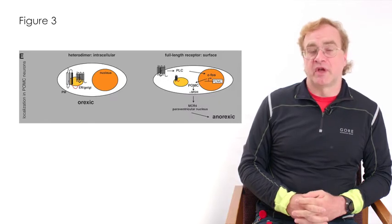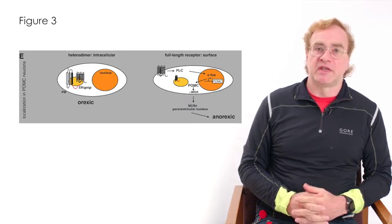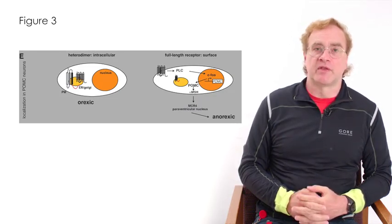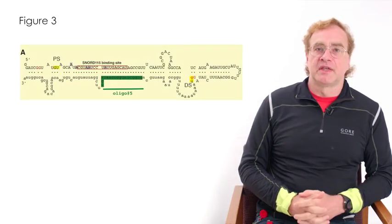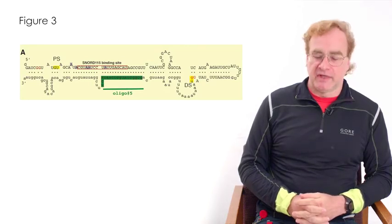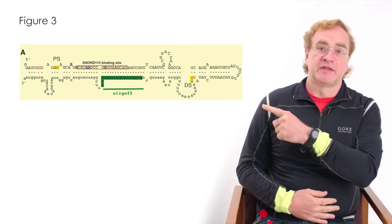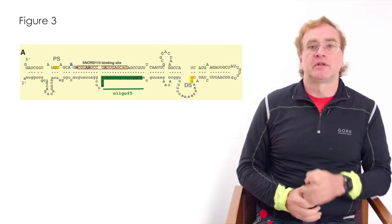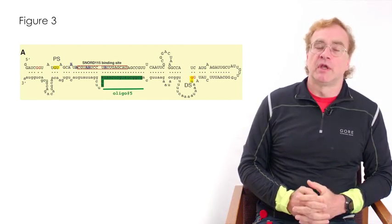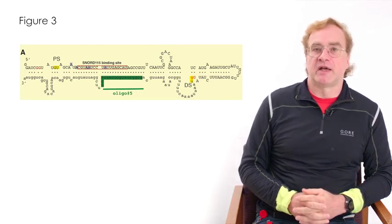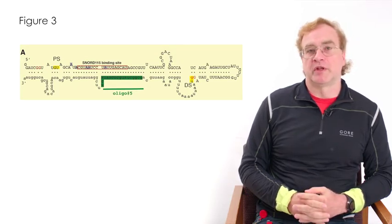In contrast, the truncated receptor is stuck in the endoplasmic reticulum and through heterodimerization can sequester the full-length receptors and possibly other receptors inside the cell. The genetic basis for these two isoforms is a double-stranded RNA structure that contains the binding site for SNORD115. Due to this double-stranded RNA structure, the normal splicing pathway is the formation of the truncated receptor. And only when SNORD115 is present, this double-stranded RNA structure is opened and the full-length receptor can be formed by inclusion of an alternative exon.